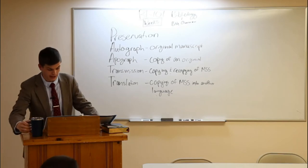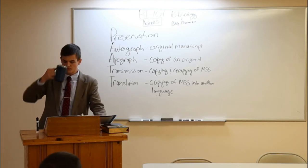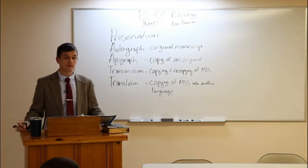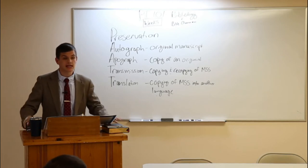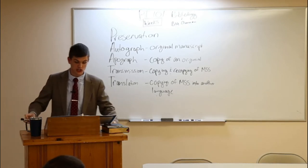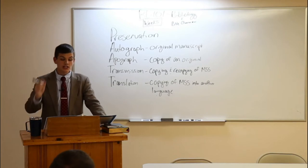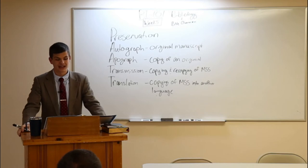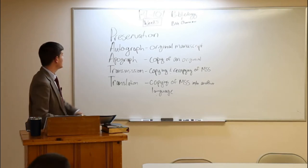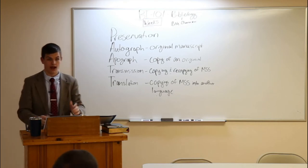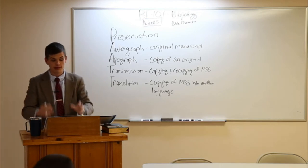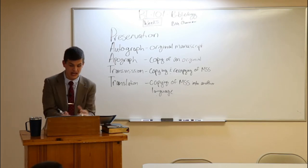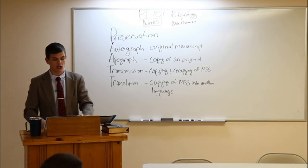Let's get into the doctrine of preservation. The things we've discussed thus far - inspiration and inerrancy and infallibility and perfection and sufficiency - these are characteristics of the form of Scripture as it was given by God in the autographs. Inspiration, infallibility, inerrancy - we're talking about those original manuscripts and the character and the nature of them. And that's where we've limited our discussion thus far.